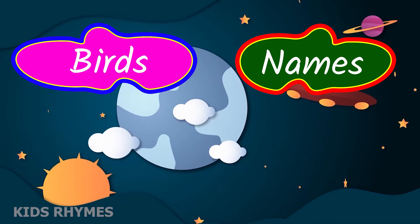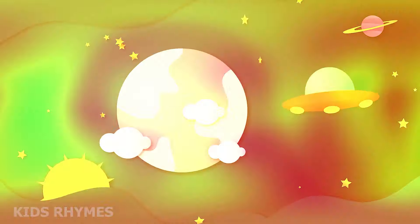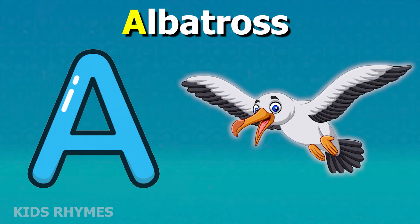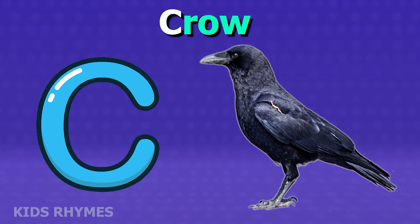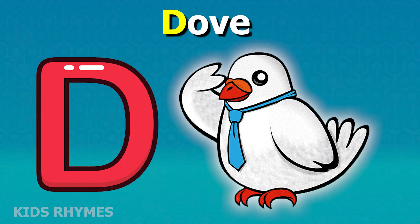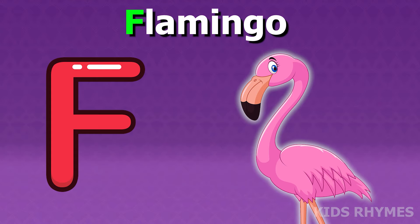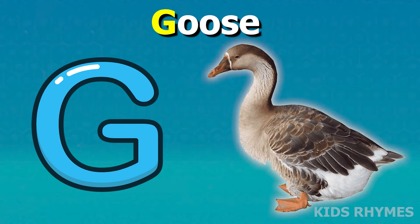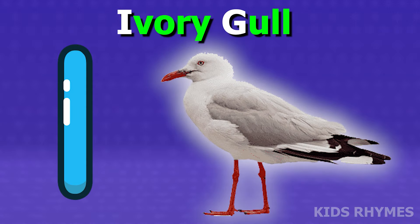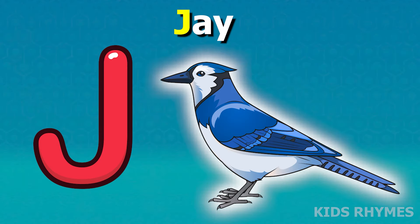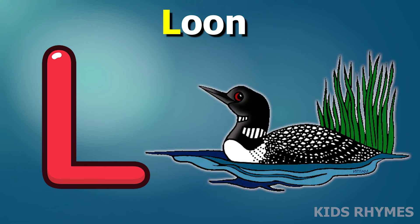Bird's name according to alphabet. A for albatross, B for blue jay, C for crow, D for dove, E for eagle, F for flamingo, G for goose, H for hen, I for ibis, J for jay, K for kingfisher, L for loon.